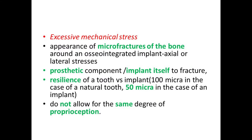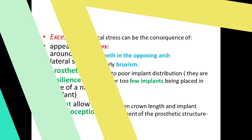If implant failure is due to excessive mechanical stress, it may lead to fracture of the bone, micro-fracture, or fracture of the implant itself. The resilience of the tooth compared to the implant is only half — 100 microns for natural teeth versus 50 microns for implants. This does not allow for the same degree of proprioception as that of normal periodontium and a natural tooth.